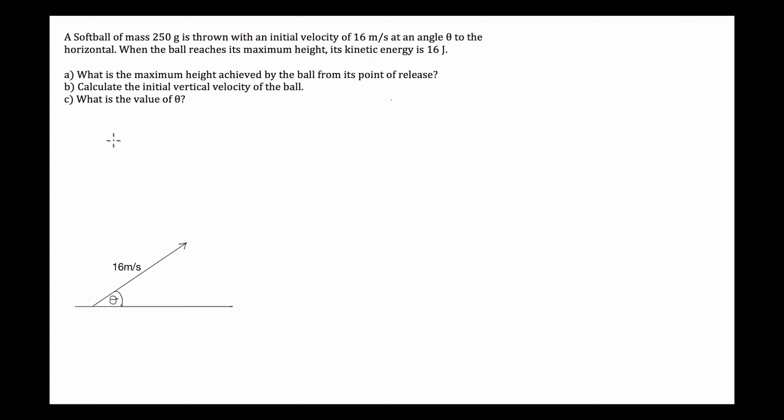Okay, we've got this physics question from the mid-semester exam. We've got a softball of mass 250 grams thrown at an initial velocity of 16 meters per second at an angle theta to the horizontal.